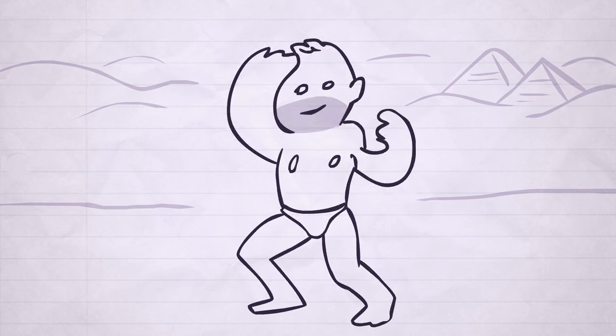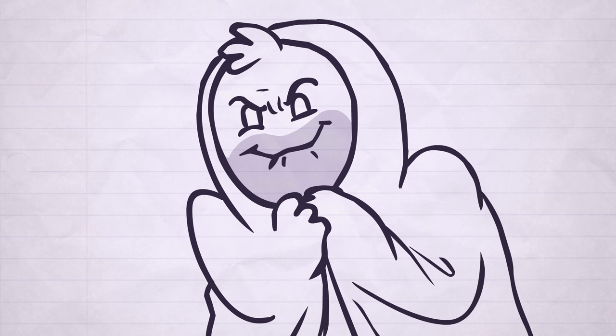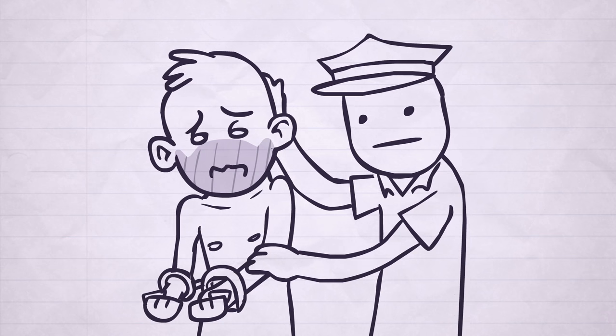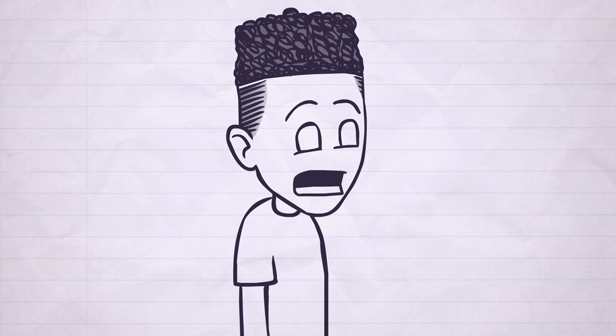Guy in Egypt who bought an invisibility cloak online thinking it was real, and then he robbed a bank with it. And he obviously got caught immediately. Yeah, like immediately. This means he got it and didn't test it out first.